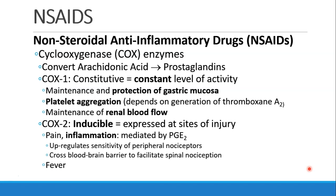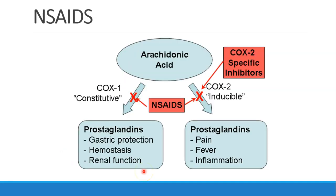The COX-2 enzyme is the one we're most interested in here. It is inducible, which means it changes its activity when there is injury at a specific site. The COX-2 enzyme is responsible for pain and inflammation — it upregulates the sensitivity of peripheral nociceptors and can cross the blood-brain barrier to facilitate spinal nociception. The COX-2 enzyme is also involved in fever, so when treating patients, we are usually focused on its effects.